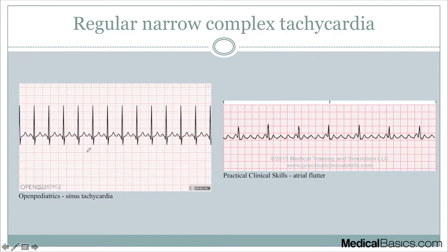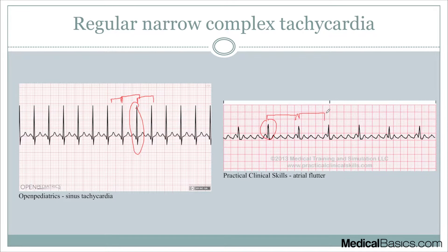The examples I'm going to use are sinus tachycardia as well as atrial flutter. You can see our QRSs are narrow — less than 0.12 seconds, or three small boxes or less — and it's going to be very regular, with the distance between each QRS being the same value. In the atrial flutter example, we see the sawtooth pattern. The QRSs are also narrow, and when we march out the QRSs, they're all going to be regular.